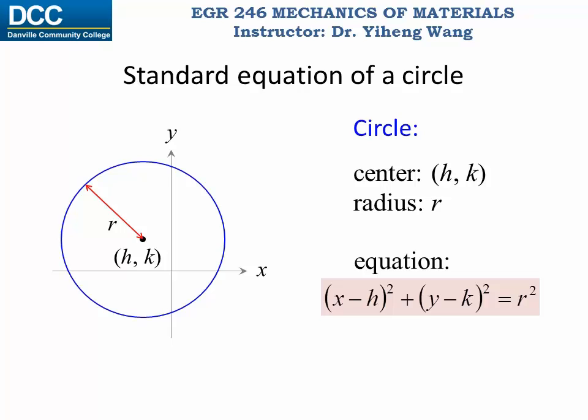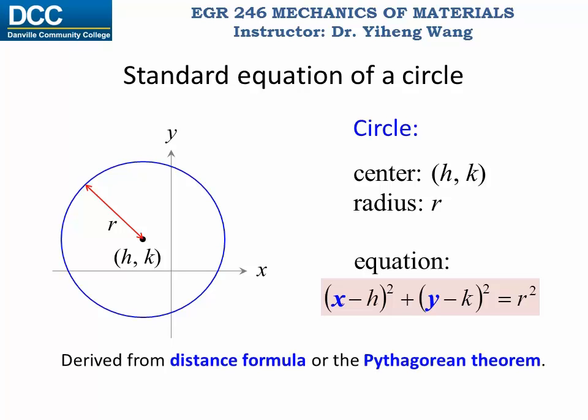Notice that in this equation only x and y are variables. h, k, and r are all constants. x and y represent the x and y coordinates of any point on this circle. This equation is derived from the distance formula, or the Pythagorean theorem, that the distance between any point on the circle and its center is always the same, and that distance is the radius r.